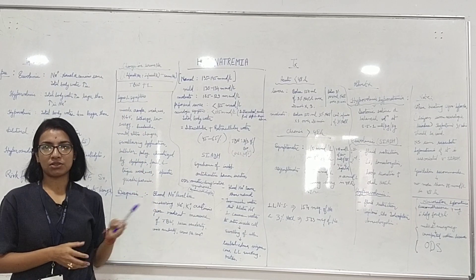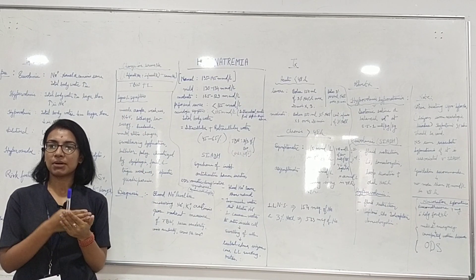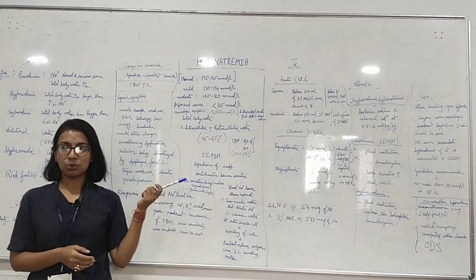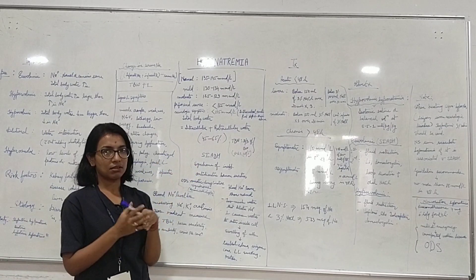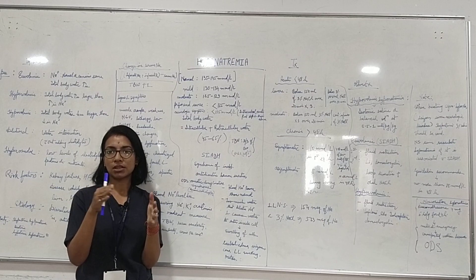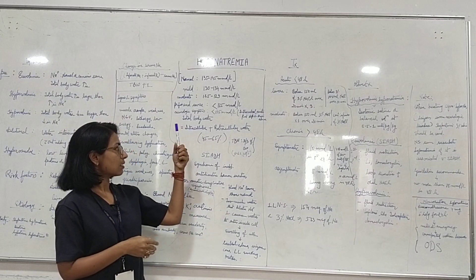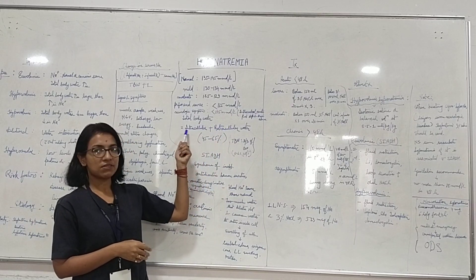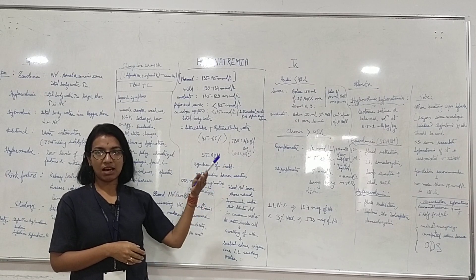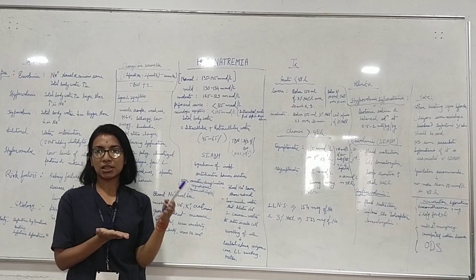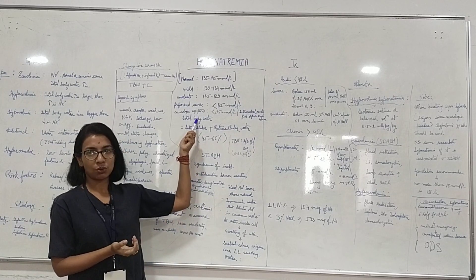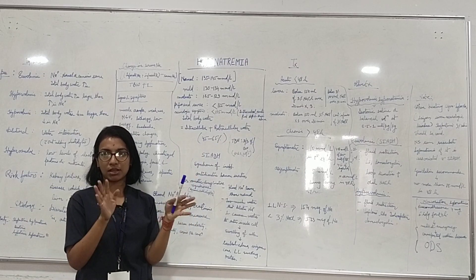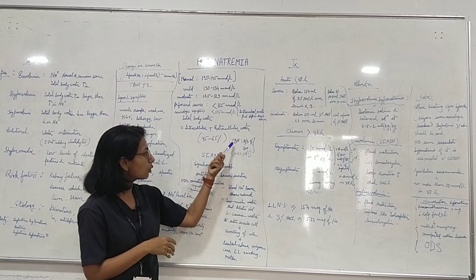Whenever a patient comes with hyponatremia, it's not just hyponatremia — there will be some other disorders or diseases. There is something called total body water that we need to know. Total body water refers to the fact that two thirds of our body weight is water. The intracellular and extracellular water together is called total body water. This plays a very important role in determining which type of hyponatremia the patient is having.